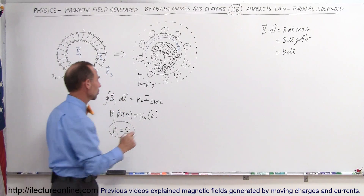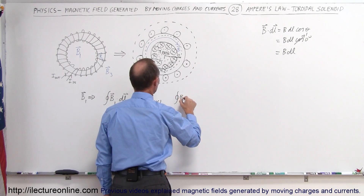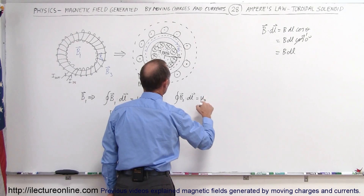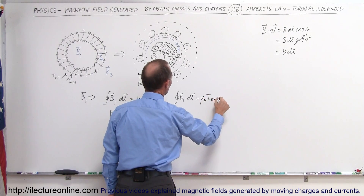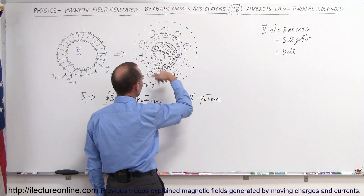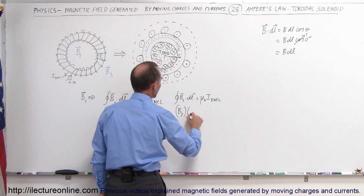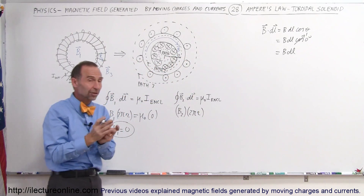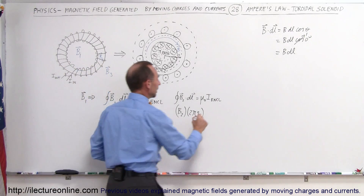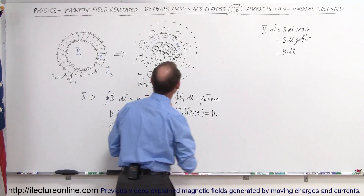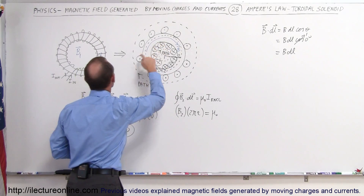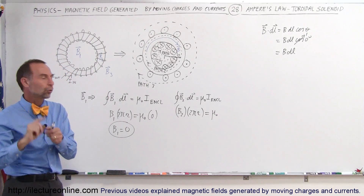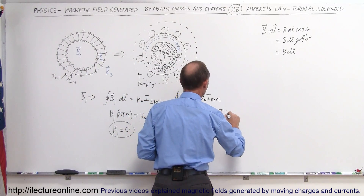Now we find B2. The closed loop integral of B2 · dL equals μ₀ times I enclosed. Again, B2 times 2πr, where r is the distance from the center to the path. That equals μ₀ times the current enclosed, which is N wires times I — the current in each wire — so simply I times N.